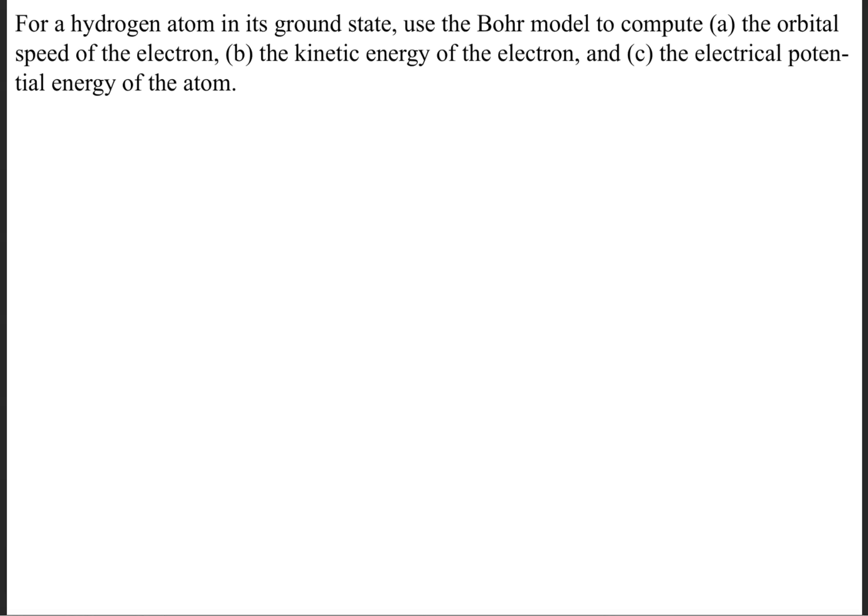Part A is asking to find the orbital speed of the electron for a hydrogen atom in its ground state. Let's begin by first finding the radius. In order to find the radius, we'll use this equation right here, that the radius is equal to n squared, which is the energy level, times h bar squared, and h bar is Planck's constant divided by 2 pi, divided by the mass of the electron, times the Coulomb constant, times the elementary particle squared.